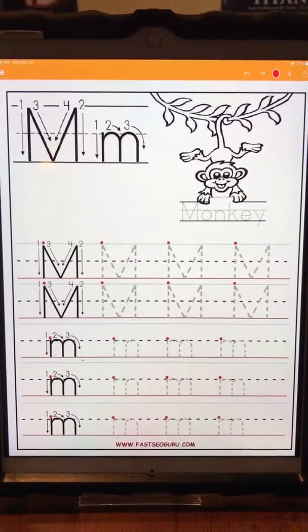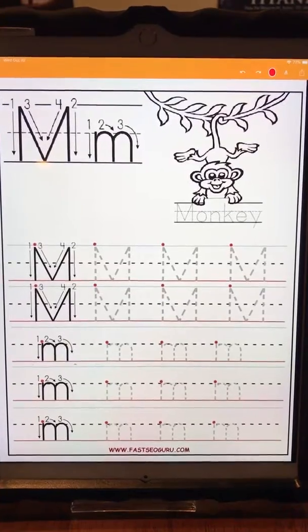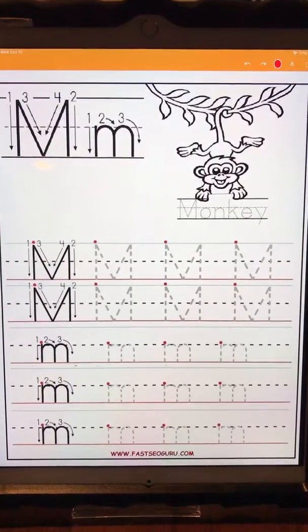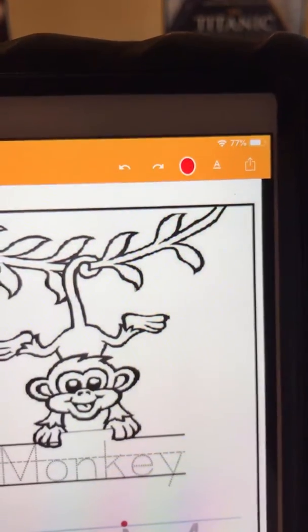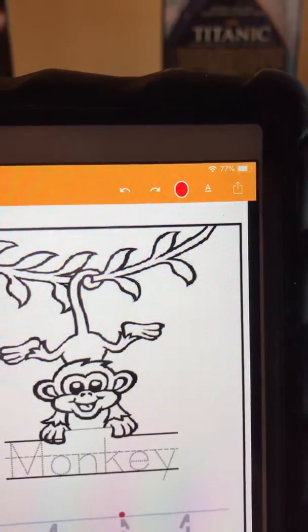So what I've added is a worksheet for the letter M. The good thing about SnapType Pro is it allows you to change the color of what you're going to be adding.